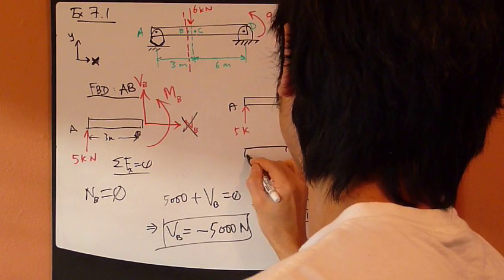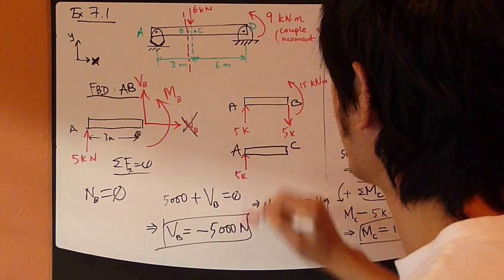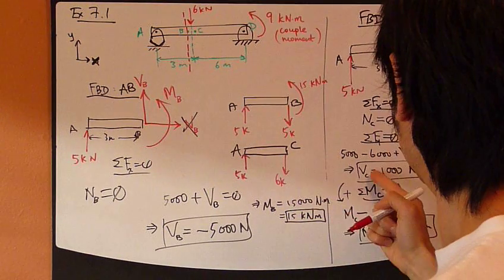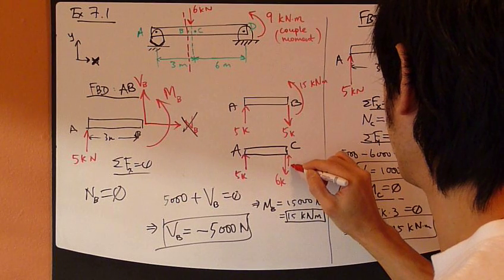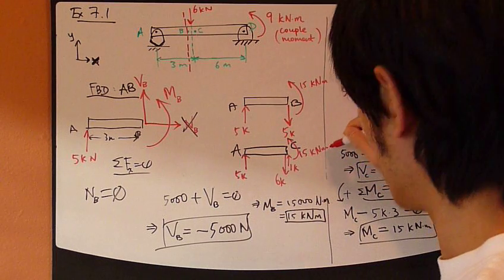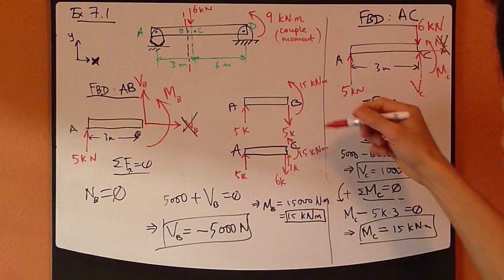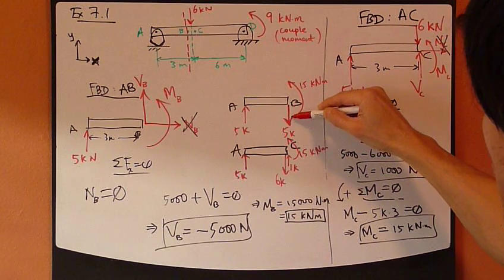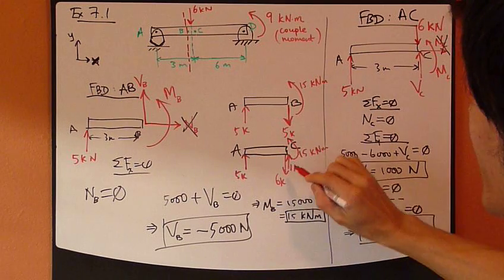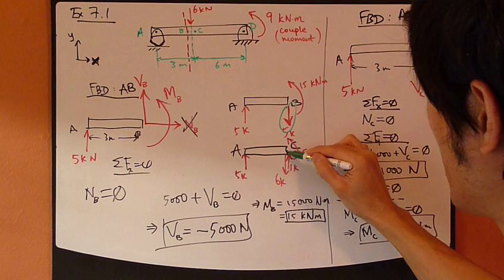I have this shear force of 1,000 going up this way, and I have a bending moment of 15,000. Compare the two. So internal forces, I have 5,000 going downward at B, but at C I only have 1,000 newtons going up. Big difference. 5,000 down, 1,000 up.